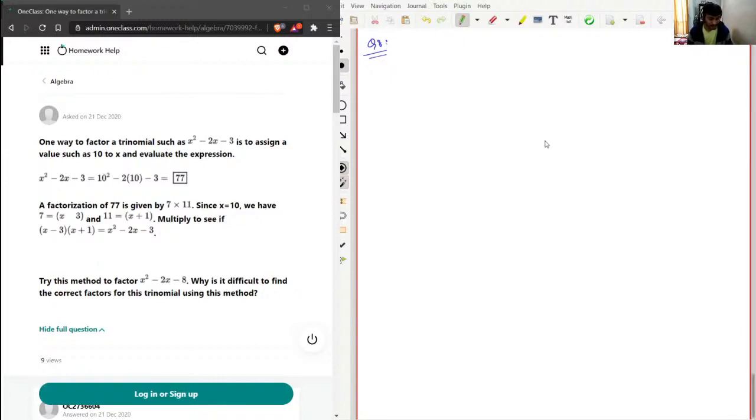Yeah, correct. So to see if x minus 3 times x plus 1 is x squared minus 2x minus 3, I'll just do the multiplication. x minus 3, x plus 1. This will be x squared, minus 3x plus x, this will be minus 2x, and this will be minus 3. So this method is correct. Now try this method to factor x squared minus 2x minus 8. Why is it difficult to find the correct factors for this trinomial using this method?